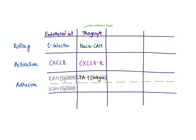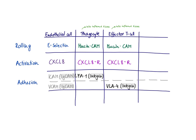We have now discussed how a neutrophil gets to the site of infection, including the molecules involved on both the neutrophil side and the endothelial cell side. Now we're going to talk about other examples where a white blood cell needs to leave the bloodstream to get into a tissue. The next example is an effector T cell.